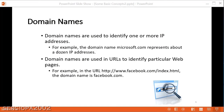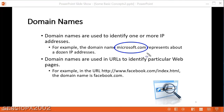Hello, today I'm going to talk about domain names. Domain names are used to identify one or more IP addresses. So for example, when we see Microsoft.com, that's a domain name and it represents about several computers — dozens of computers that have different IP addresses at Microsoft.